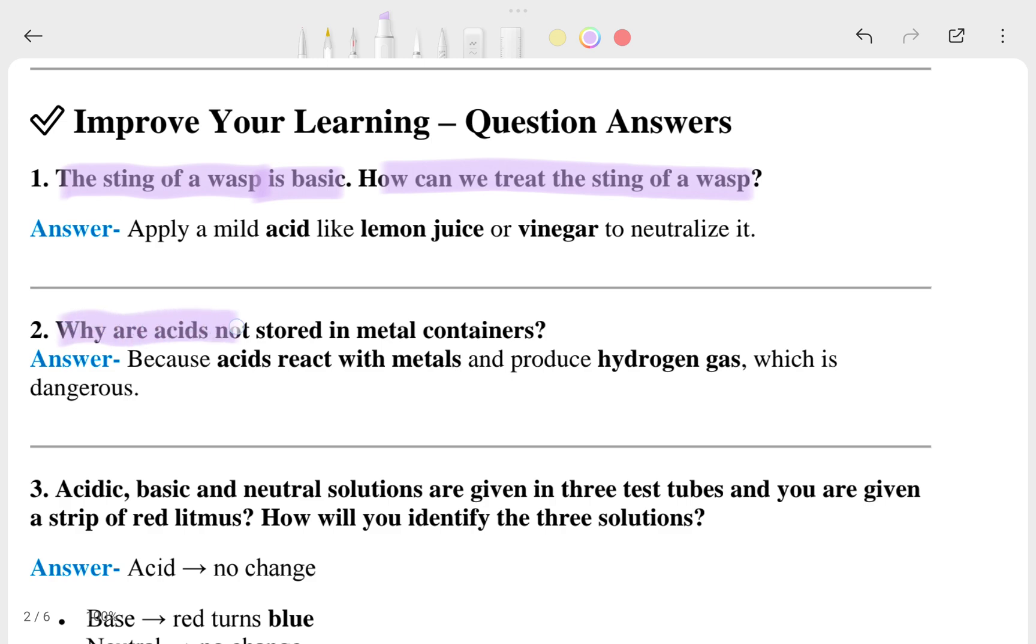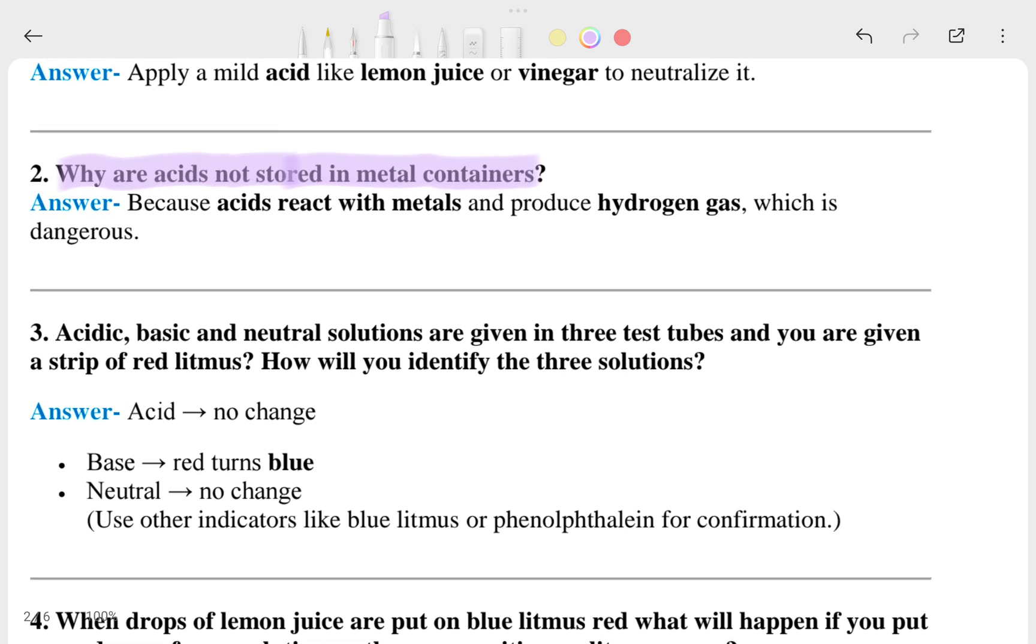Let's go to the second question. Why are acids not stored in metal containers? This is a good question. The third one: acidic, basic, and neutral solutions are given in three test tubes and you are given a strip of red litmus. How will you identify the three solutions?